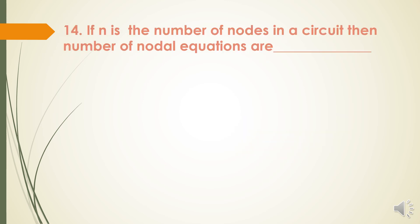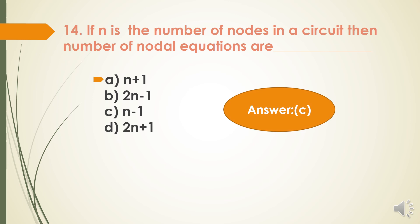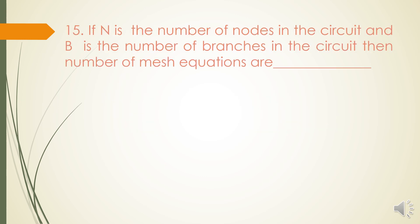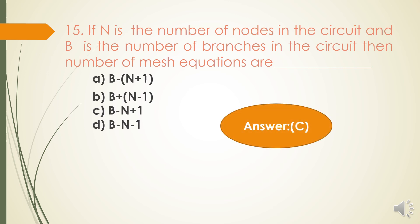Next question: If n is the number of nodes in a circuit, then the number of nodal equations are n−1. So if you have n nodes, there will be n−1 nodal equations. Next question: If N is the number of nodes in a circuit and B is the number of branches, then the number of mesh equations are B−N+1. The correct answer is option C: B minus N plus 1, where B is the number of branches and N is the number of nodes.